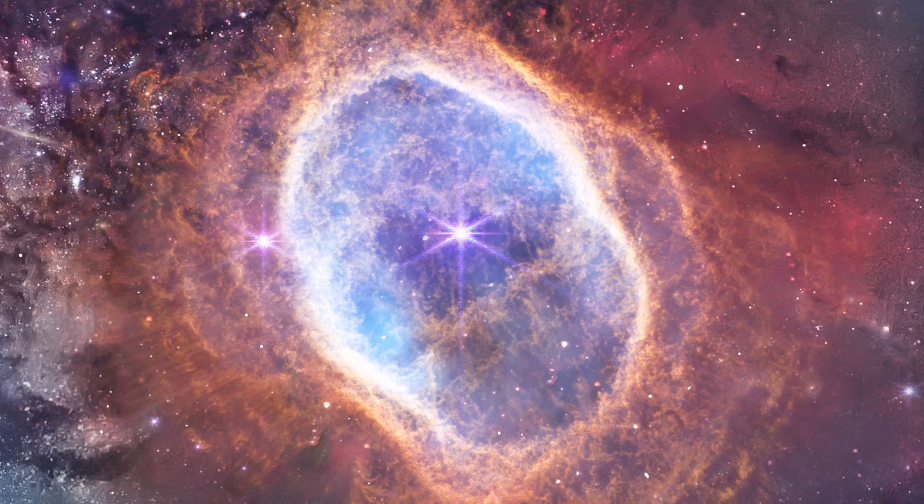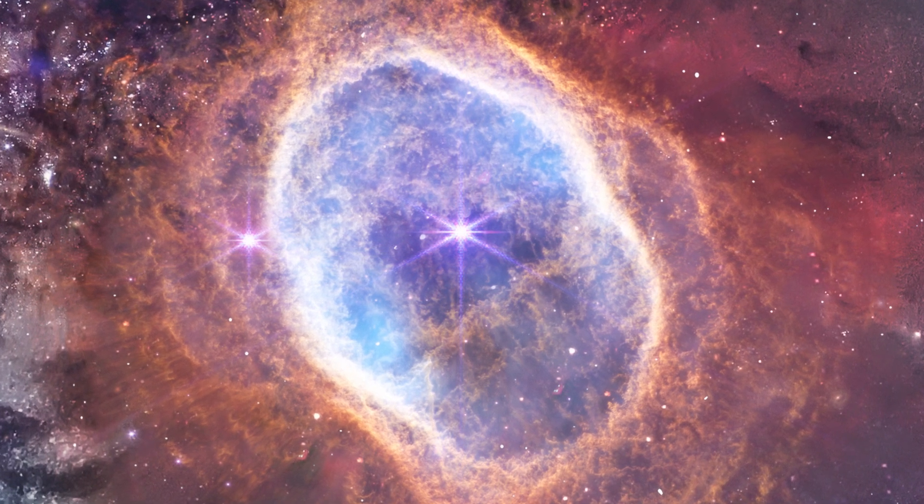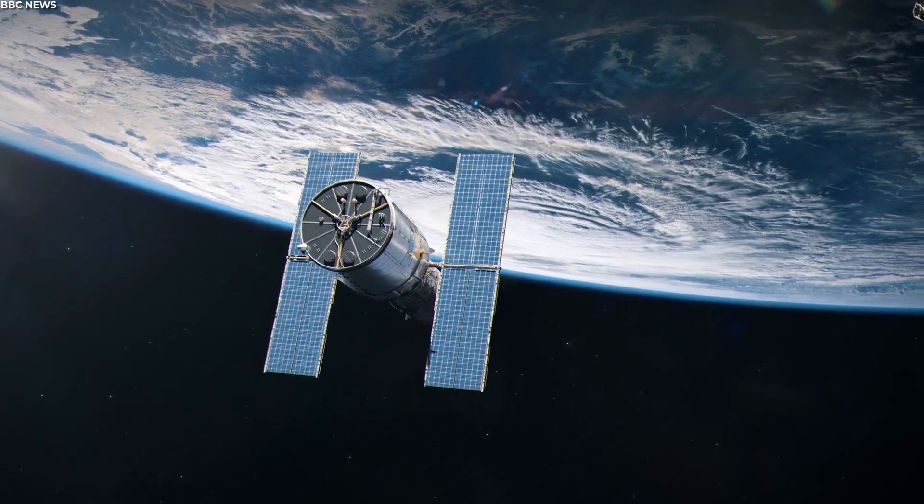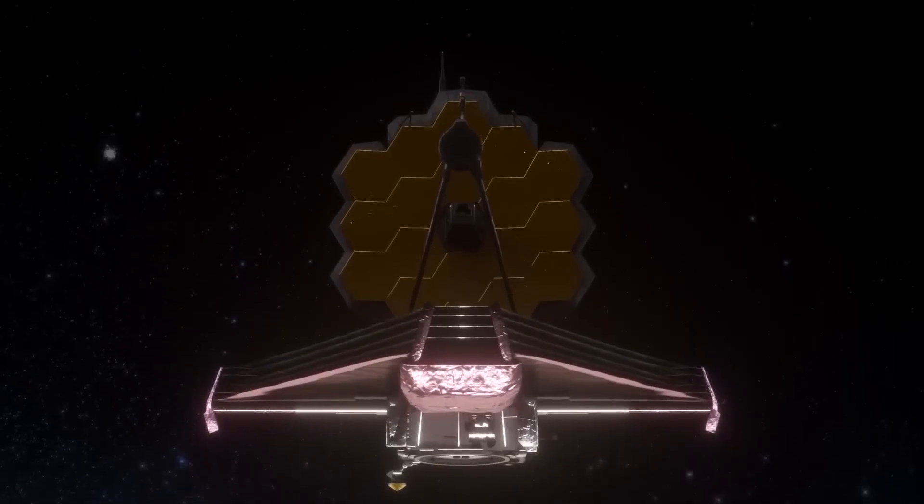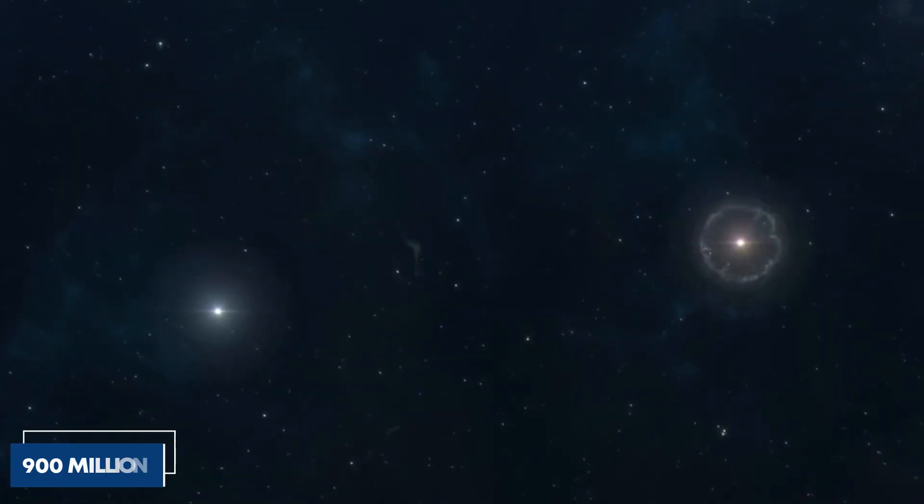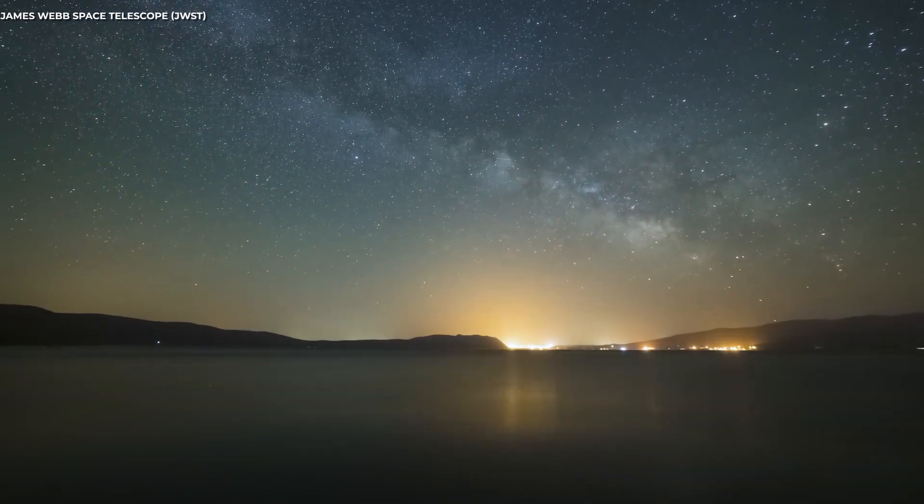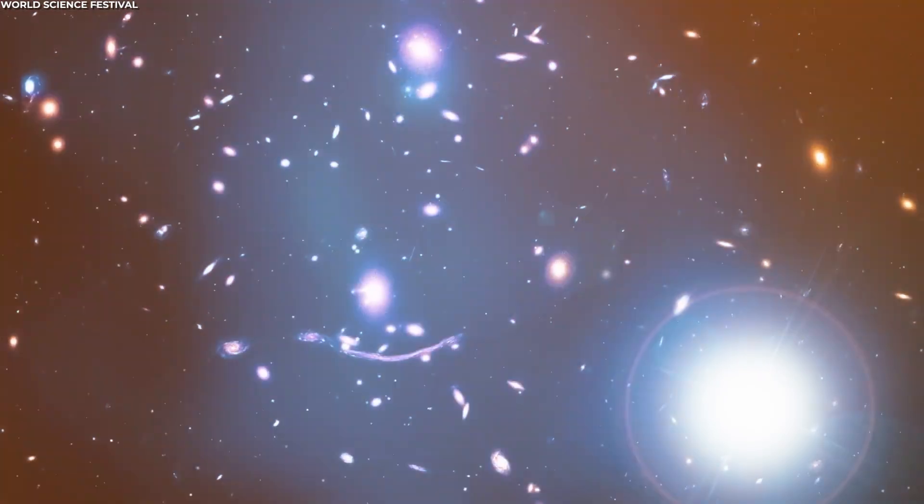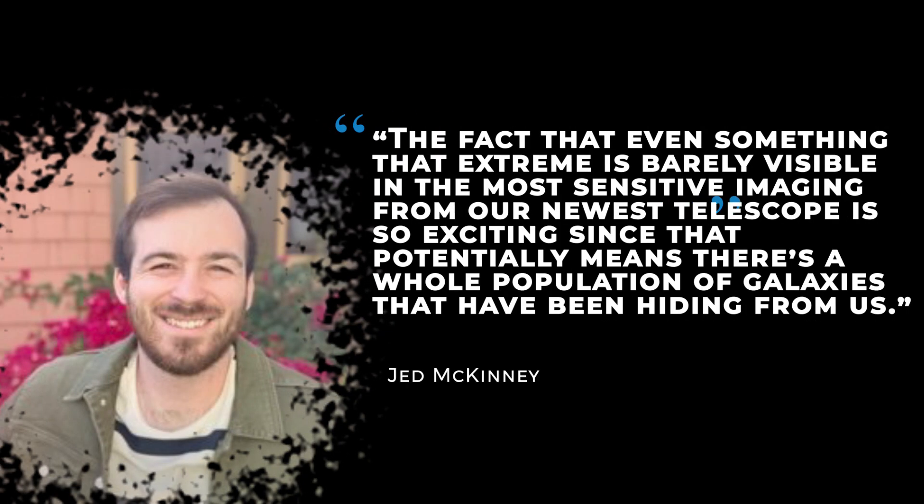Let's look at another galaxy from the early universe that the Webb Telescope has discovered. It's a blurry, dust-obscured galaxy situated so far from Earth that it's been hidden from the eyes of telescopes all these years. This captivating image, thanks to the powerful James Webb Space Telescope, spotlights galaxy AZTECC71. What's truly shocking is that we're witnessing AZTECC71 as it appeared just 900 million years after the Big Bang, a time when the universe was sparking to life with its very first stars. The fact that even something that extreme is barely visible in the most sensitive imaging from our newest telescope is so exciting, since that potentially means there's a whole population of galaxies that have been hiding from us.